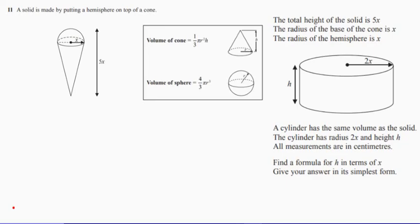Question 11. Now, for question 11, to get started you need to recognise that that length is x — see that? It's part of the radius. So therefore, that length is 4x. Now let's think about what the volume of the cone and sphere is.